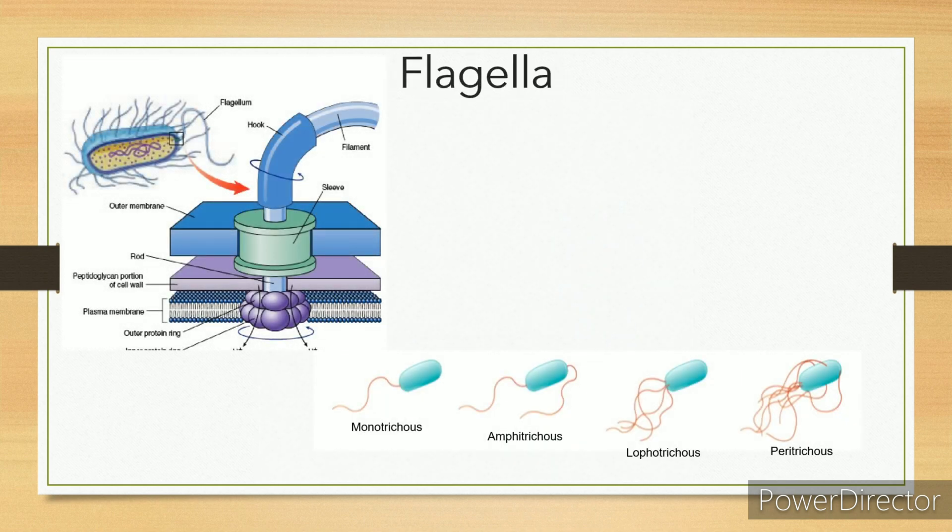Flagella. It helps the bacteria to move from one place to another. Swarming occurs in some bacteria. Arrangement basis for classification: Monotrichous (one flagellum), Amphitrichous (both ends), Lophotrichous (tuft at one end), Peritrichous (all around bacteria).